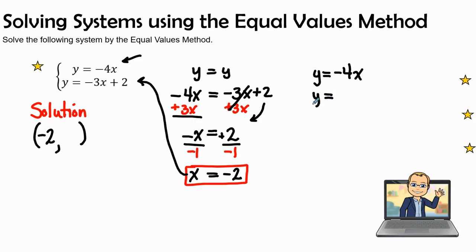I always replace the variable that I'm plugging in with parentheses, and so I am going to plug in a negative 2 right here. So y is equal to positive 8. This tells me what my y value is, and so I can go ahead and plug the y value here to be a positive 8.